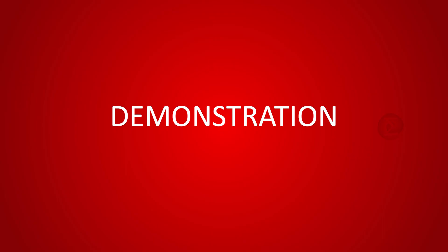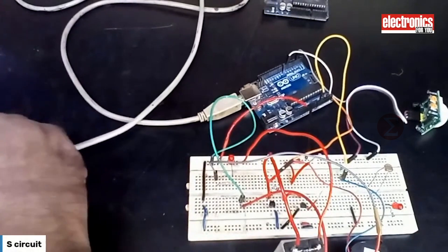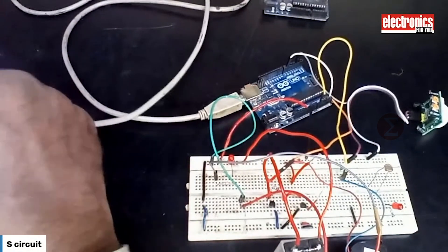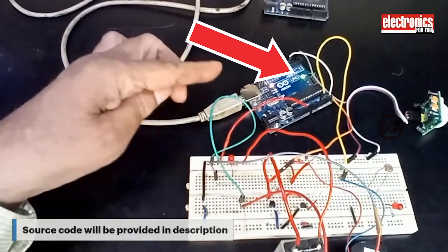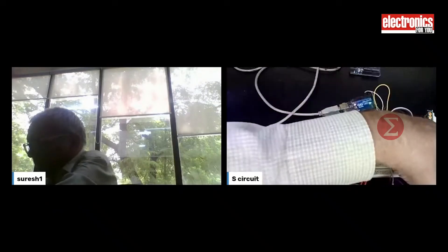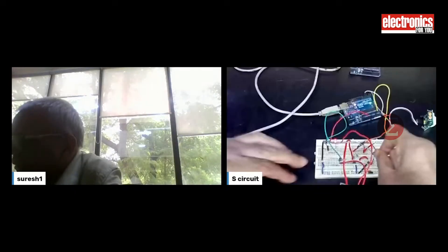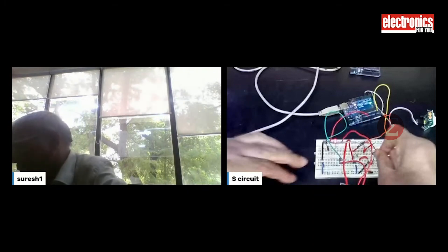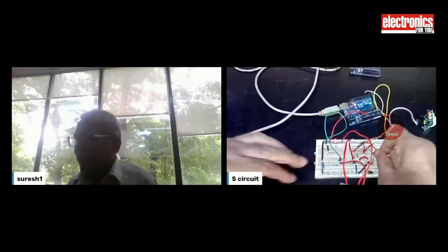Let us see the demonstration now. We have uploaded the code to the Arduino board. Now connect the Arduino board to your laptop for power supply. You can see this LED glowing. It means code is uploaded. Put your hand over the LDR to restrict light and bring your hand towards the PIR sensor. You can see the LED is glowing and buzzer starts to blow. The LED will glow for 10 seconds and then will turn off.